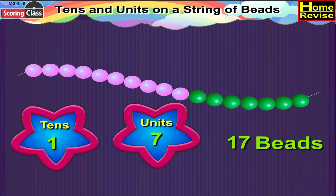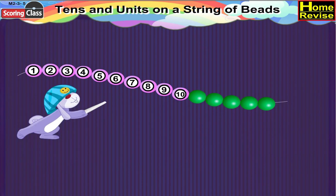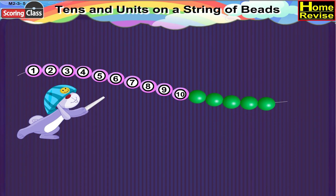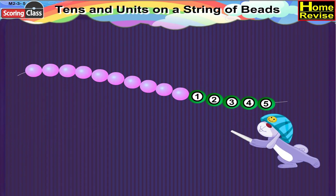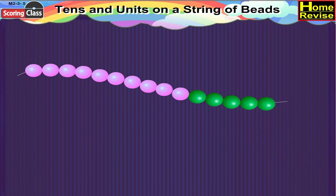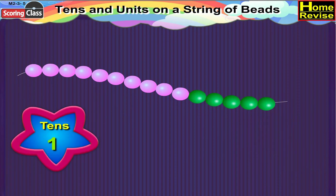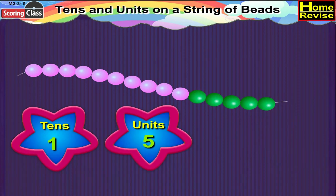In the third string, pink beads are ten in number and five green beads remain. So it is one ten, five units, or fifteen.